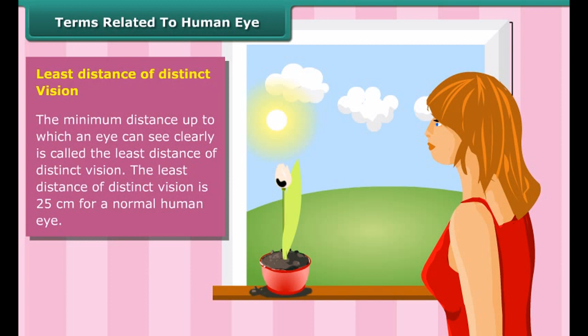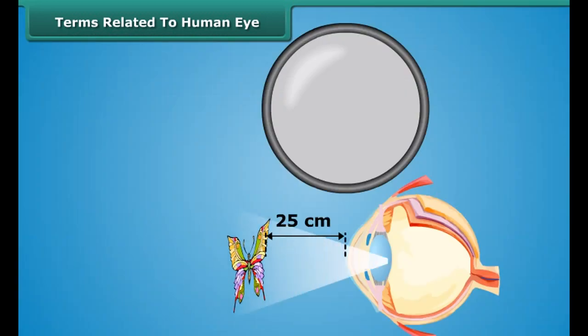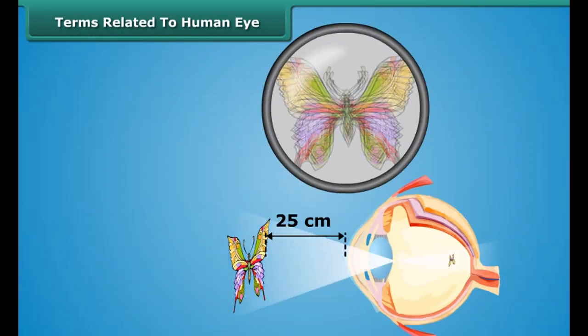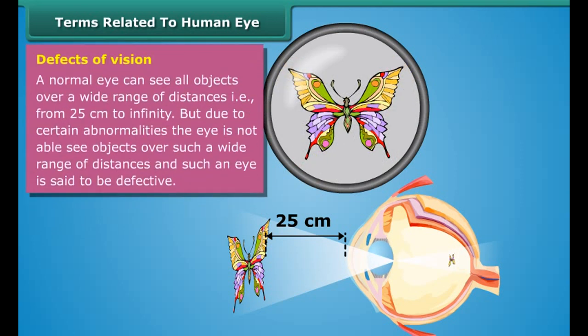The least distance of distinct vision is the minimum distance up to which an eye can see clearly. The least distance of distinct vision is 25 cm for a normal human eye.